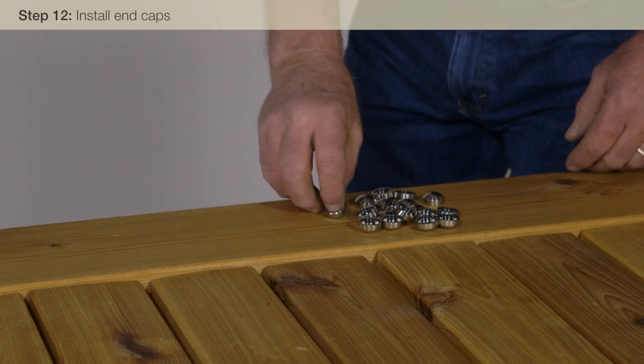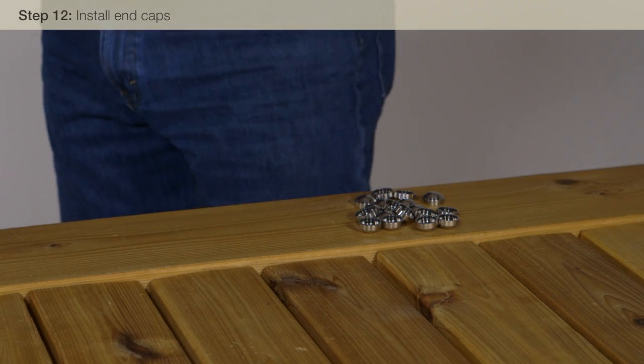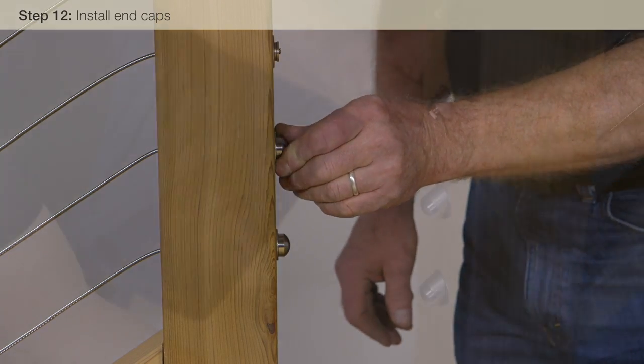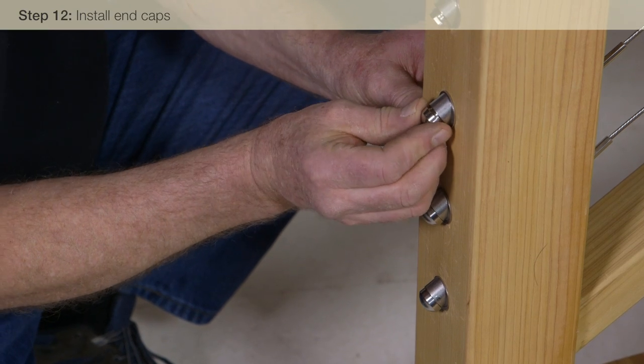We finish the assemblies with the dome-style stainless steel end caps. Snap them on over the exposed Quick Connect fittings and the snug grip washer nuts.